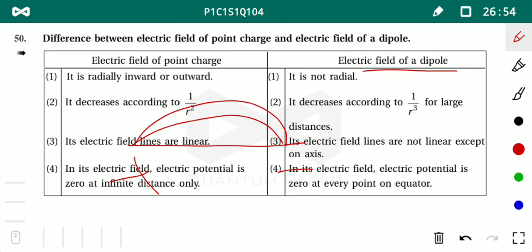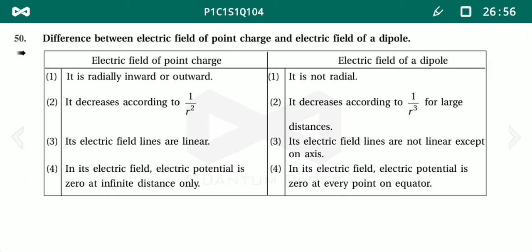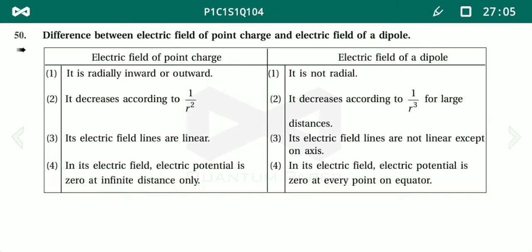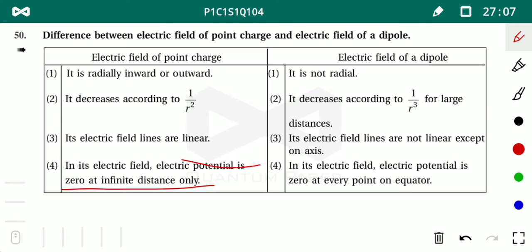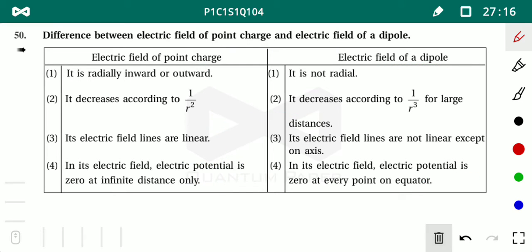Another difference: electric field lines for a point charge are linear, while for a dipole they are linear only along the axis — elsewhere they become curved. Also, the electric potential for a dipole is zero at any point on the equatorial plane.